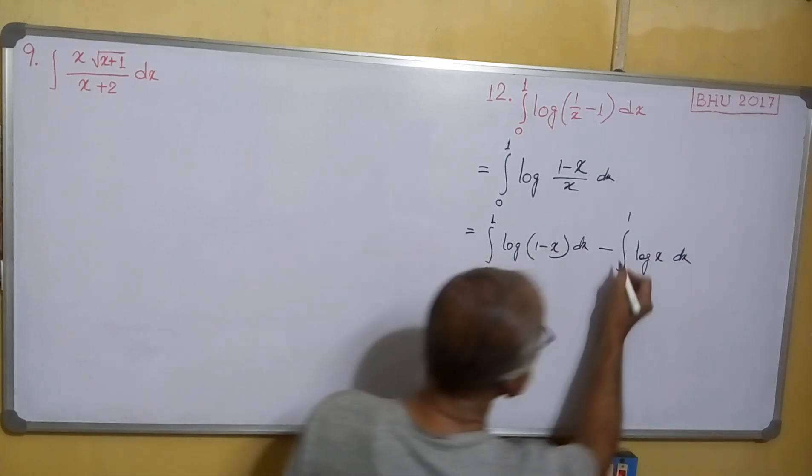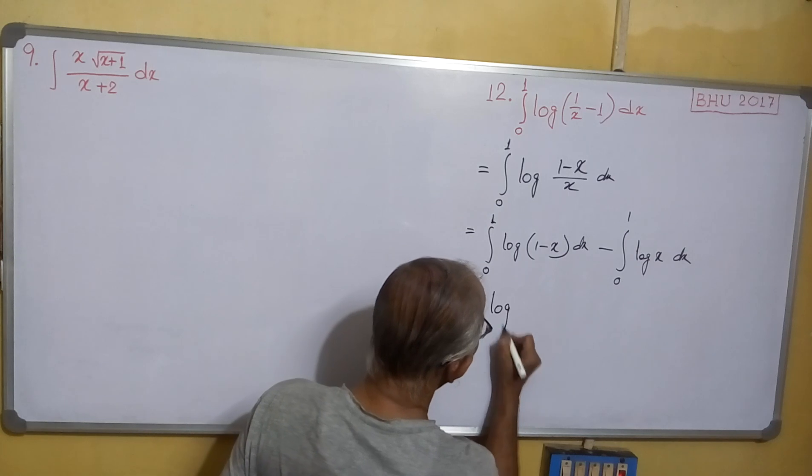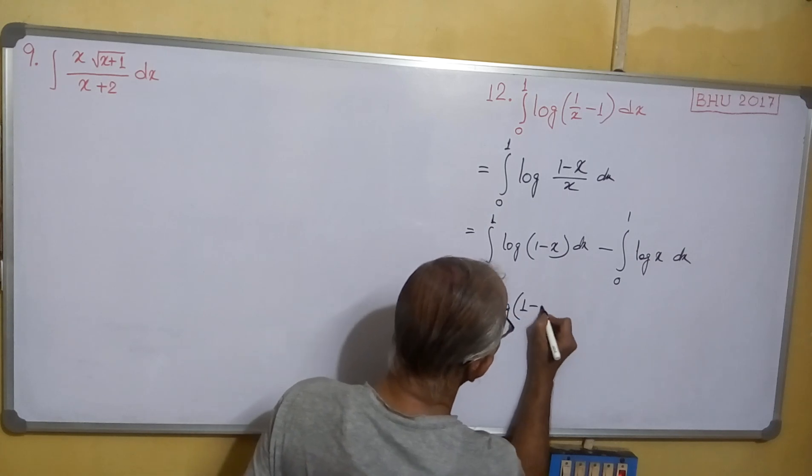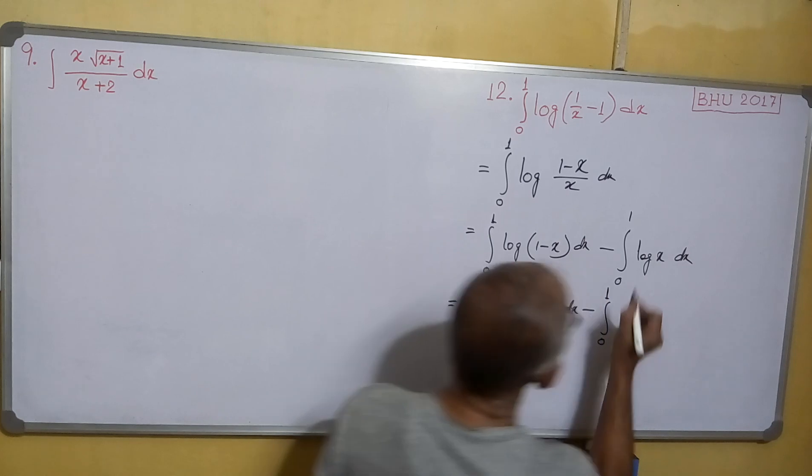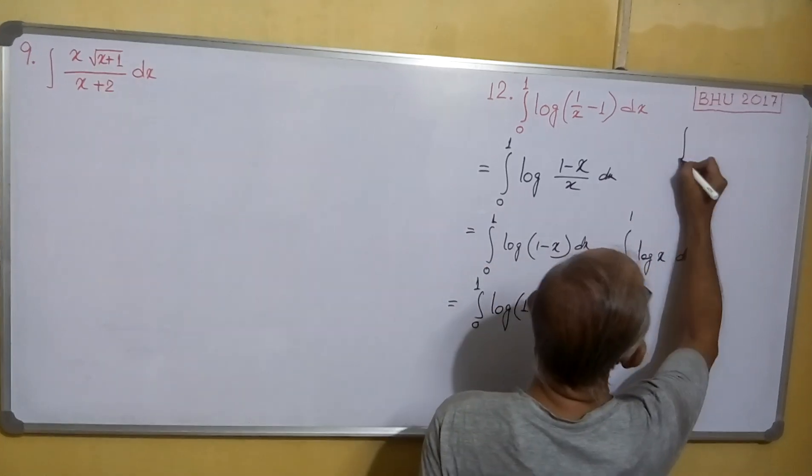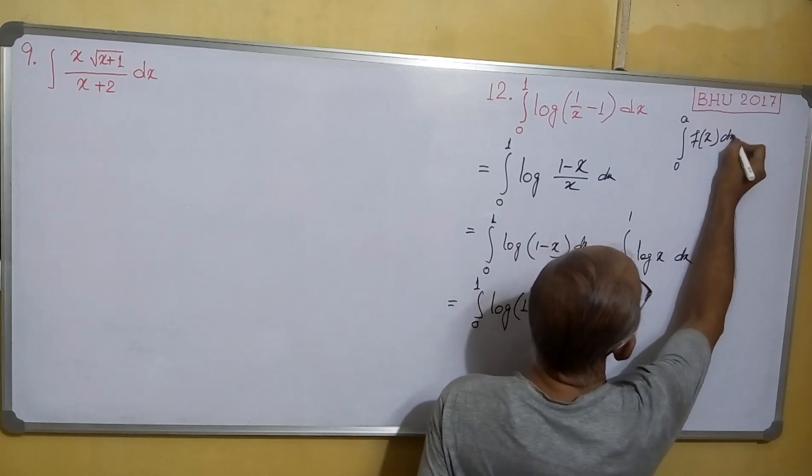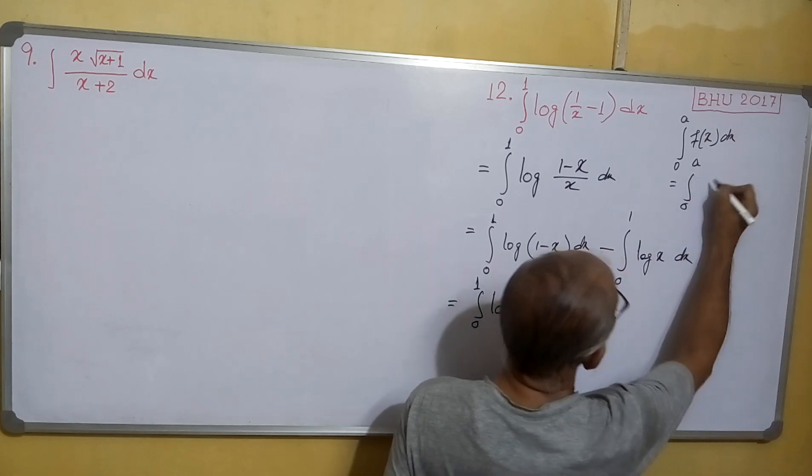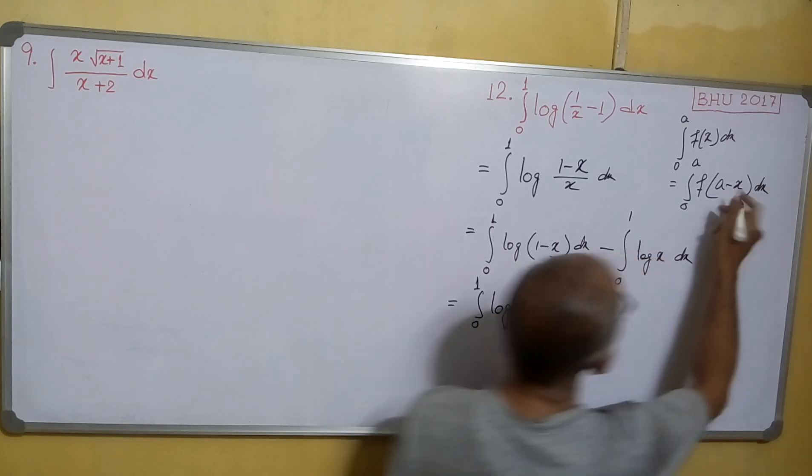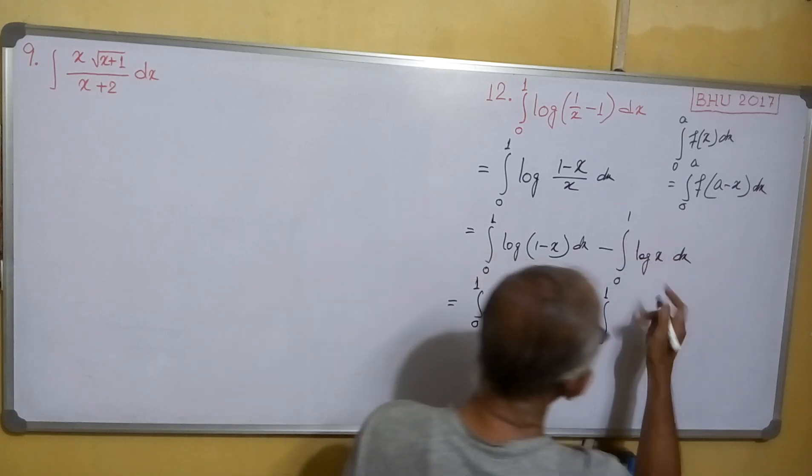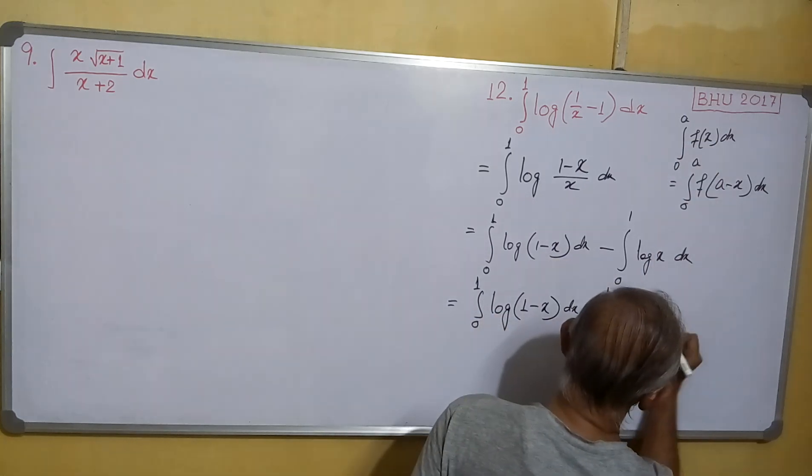This equals, we can write the same thing: integral 0 to 1 log(1-x) dx minus integral 0 to 1. You have to remember for integration, integral 0 to a of f(x) dx also equals integral 0 to a of f(a-x) dx. This is a property of definite integrals. So using this property, we can write log(1-x) dx.